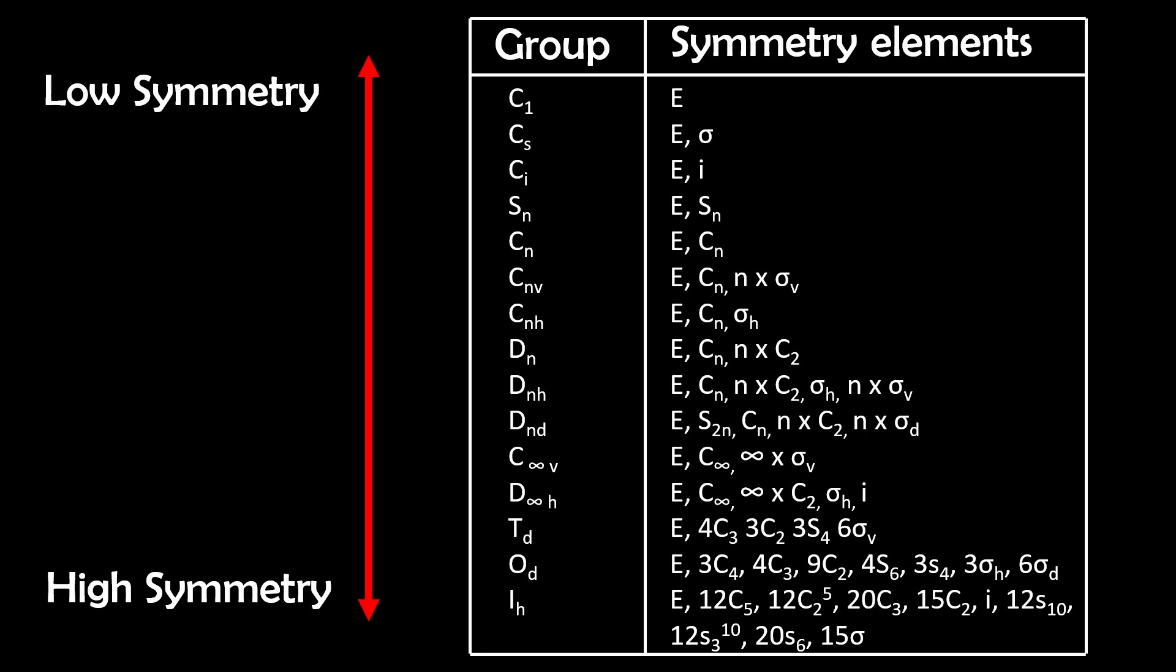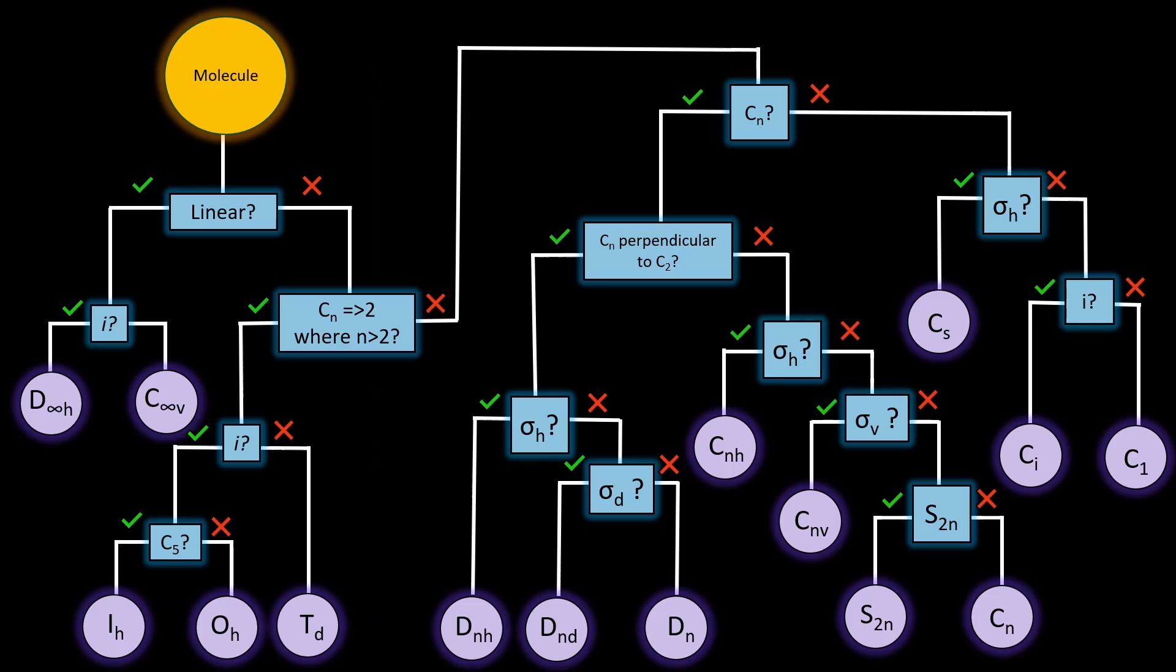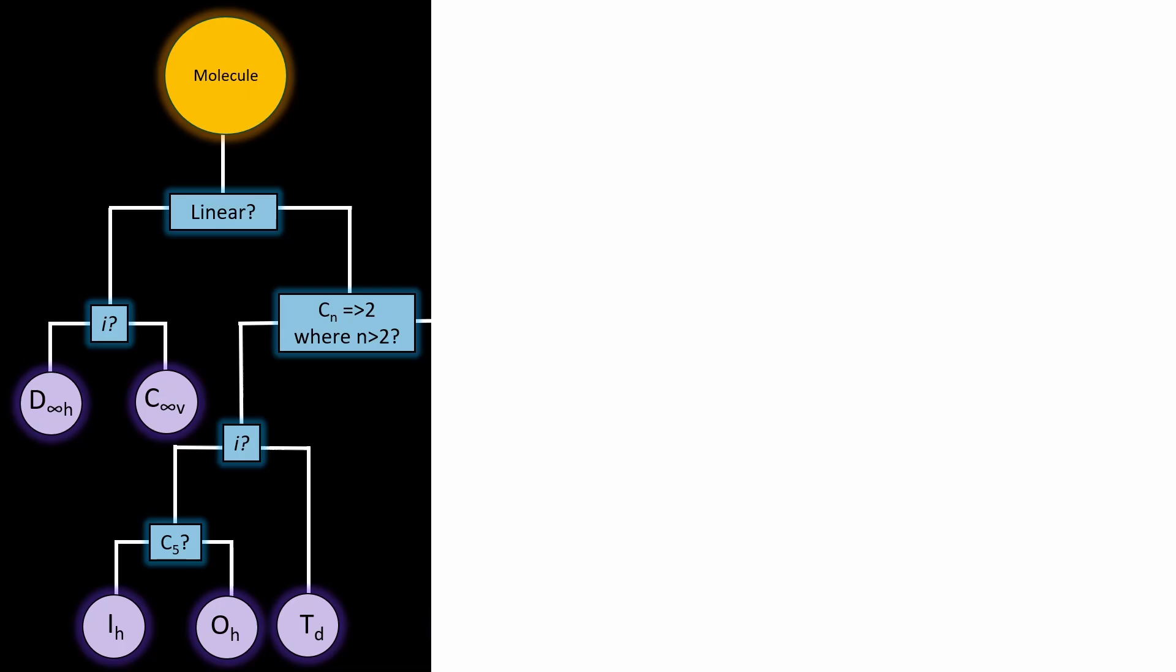Every molecule has its own set of symmetry elements and these determine which point group it belongs to. I've actually included a table of common point groups from low to high symmetry, but instead of memorizing these we'll use this much simpler flowchart I've made to figure out the point groups.